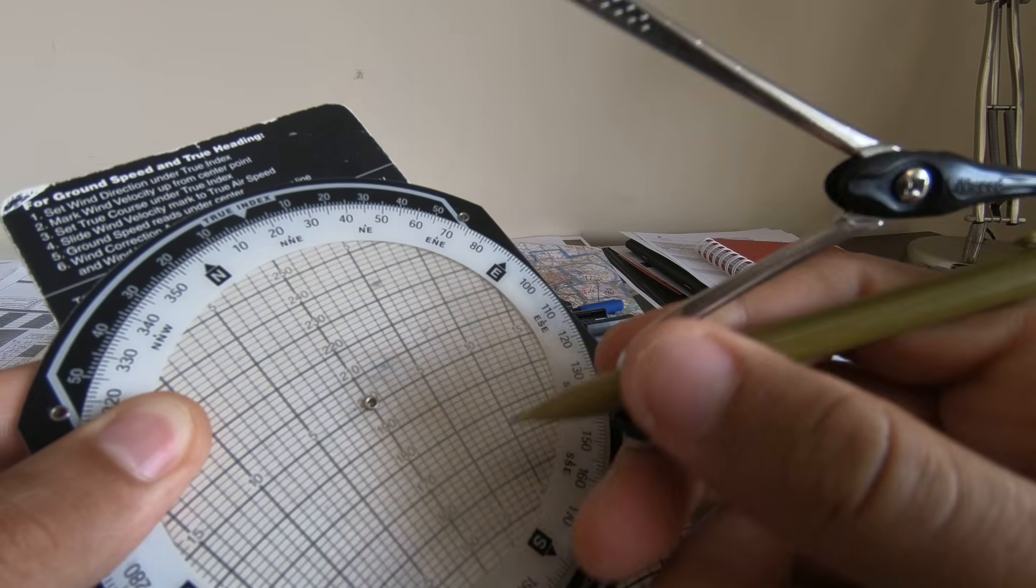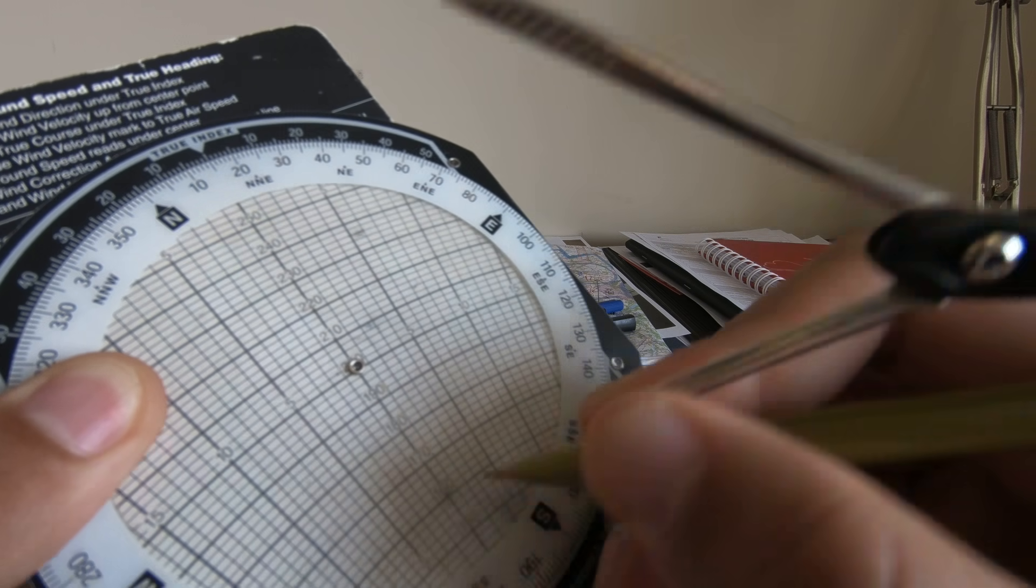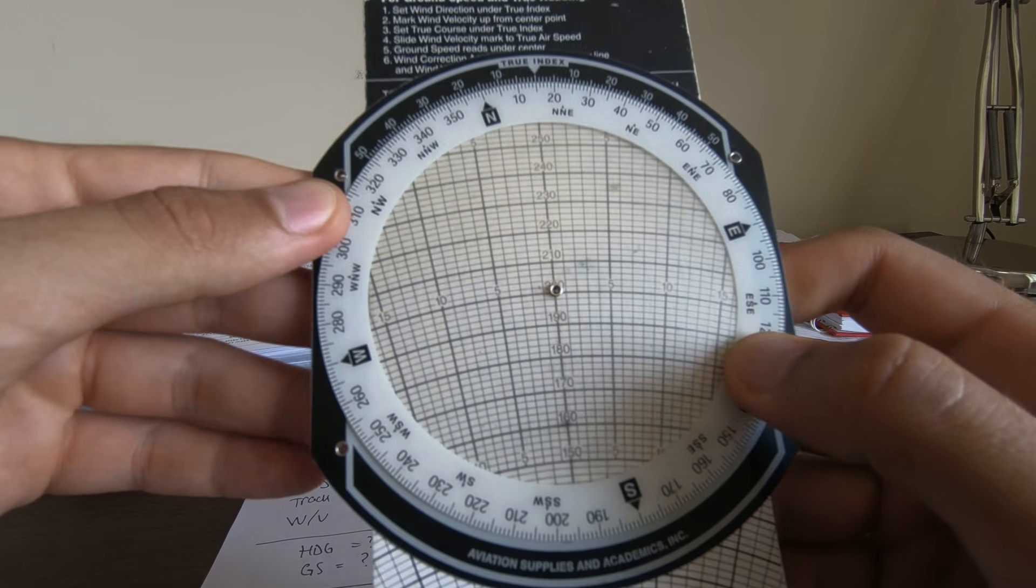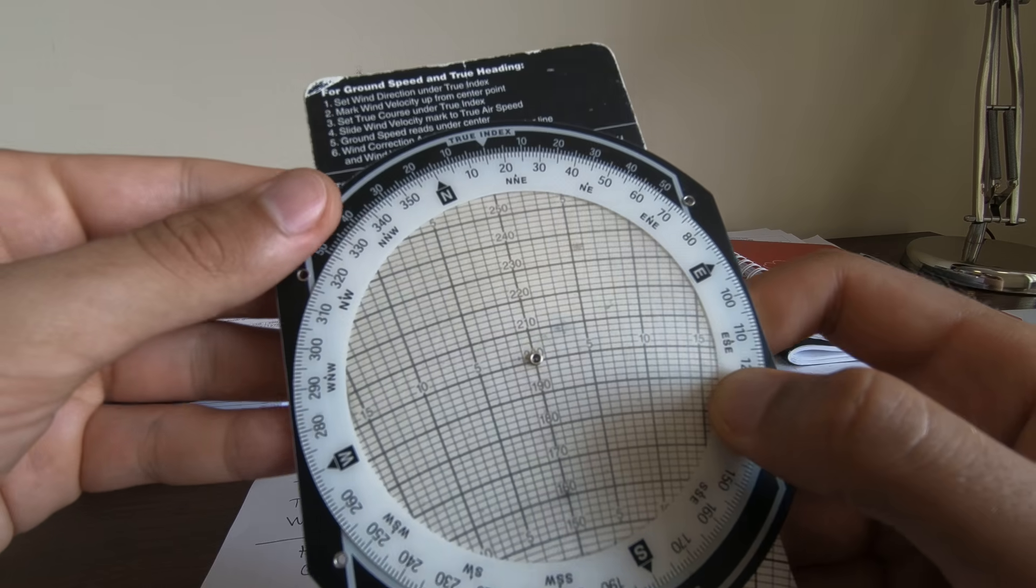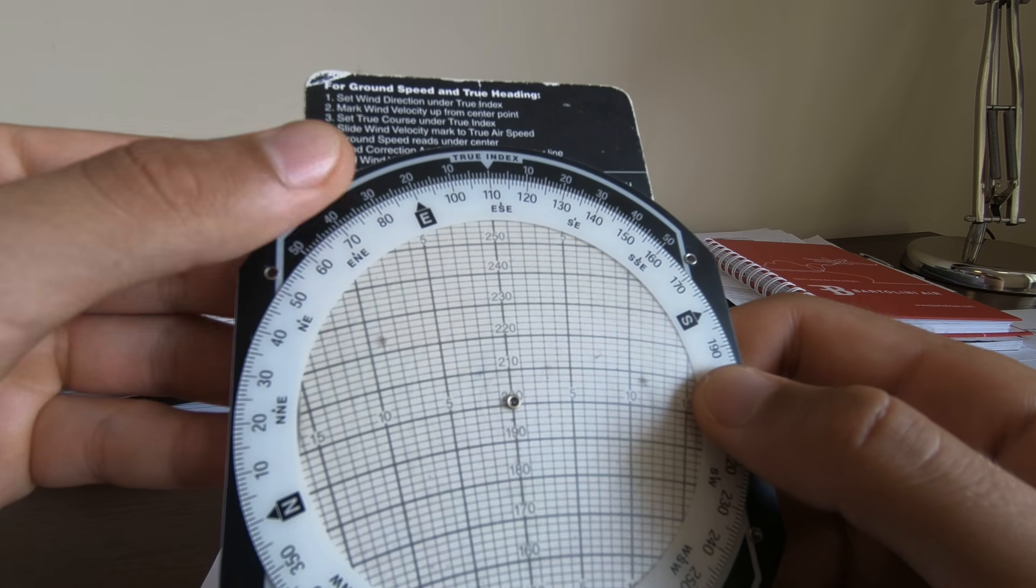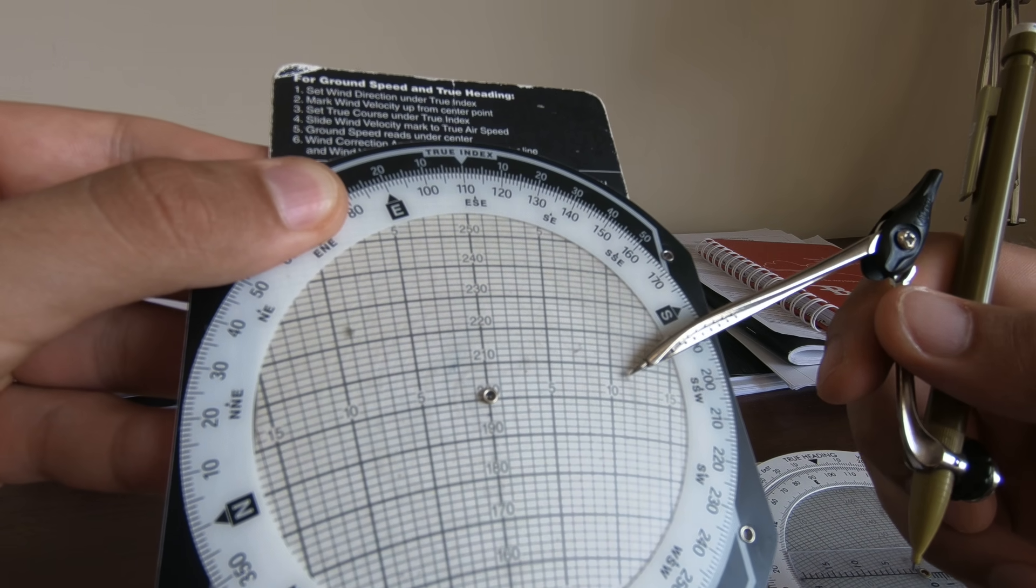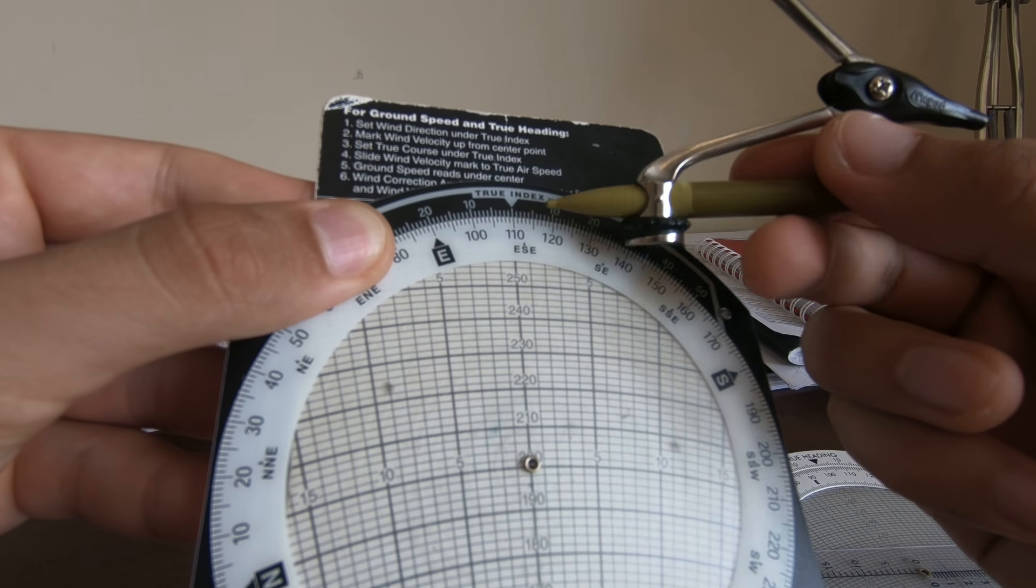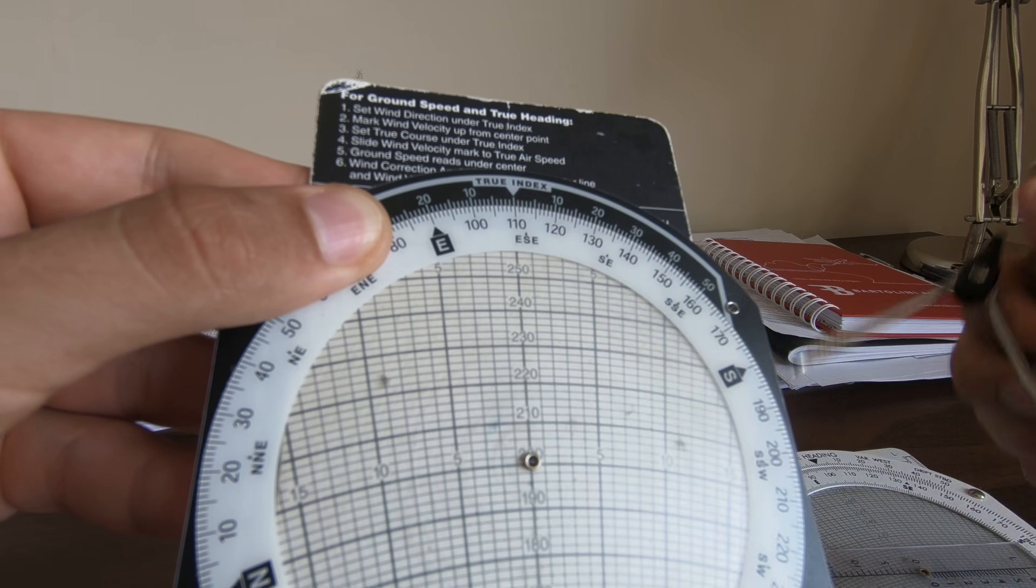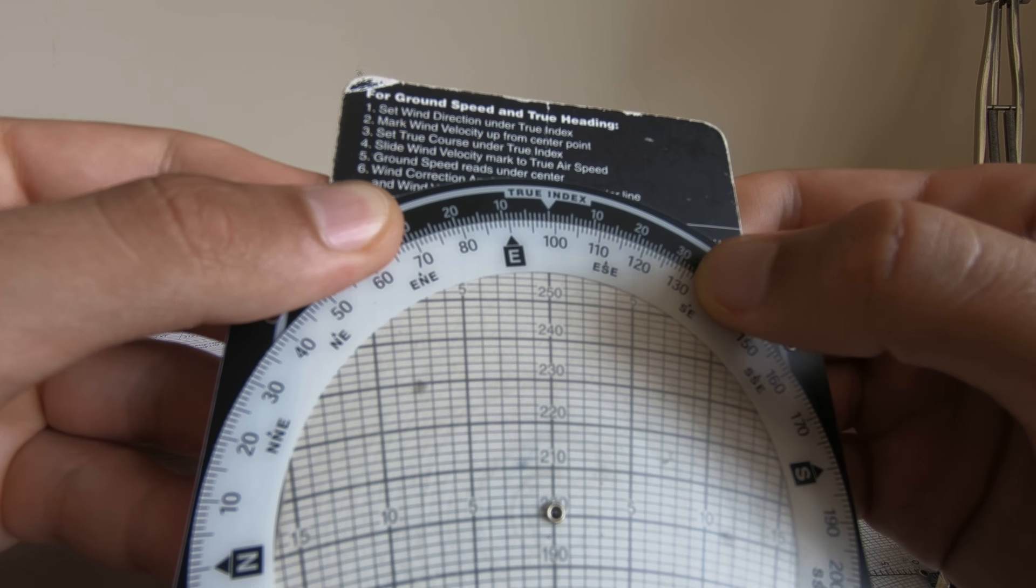And then we go for 110, the true track 110, there we go. So as you can see, we have here a drift of 11 degrees, the same as the CRP5. So we have to put here the true heading instead of the true track. So we minus 11.